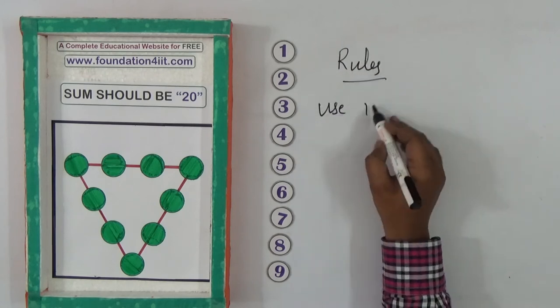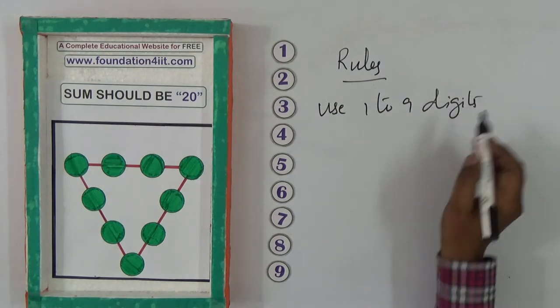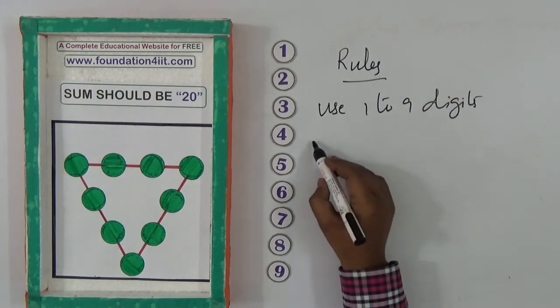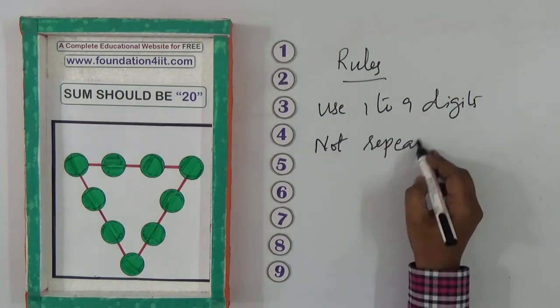Rule 1: Use one to nine digits. We need to use all digits from one to nine and not repeat any digit.